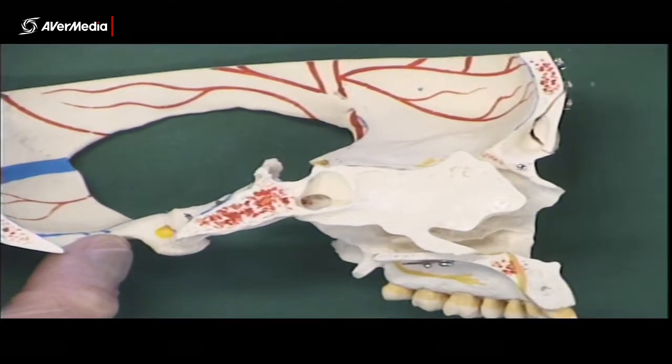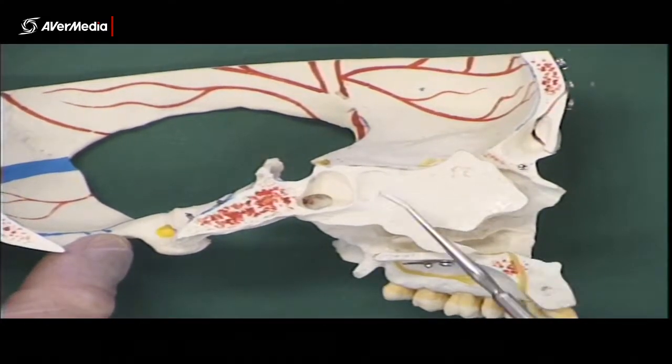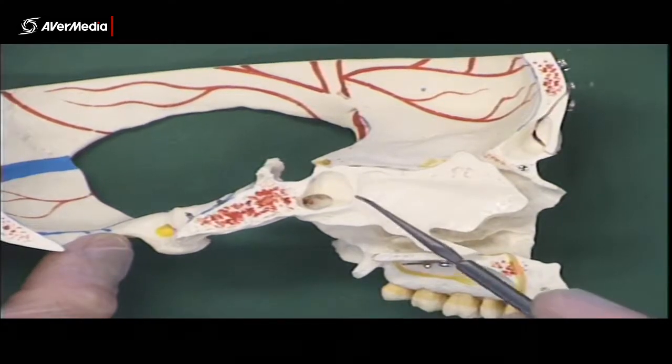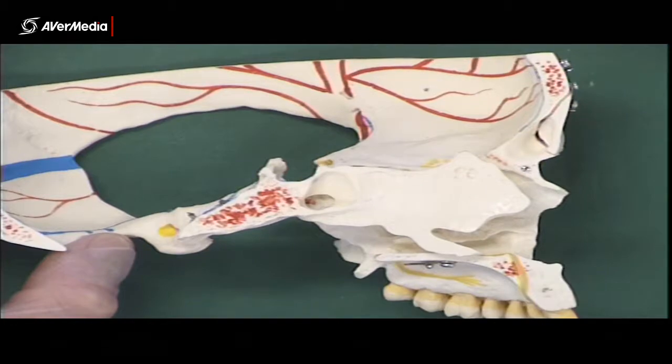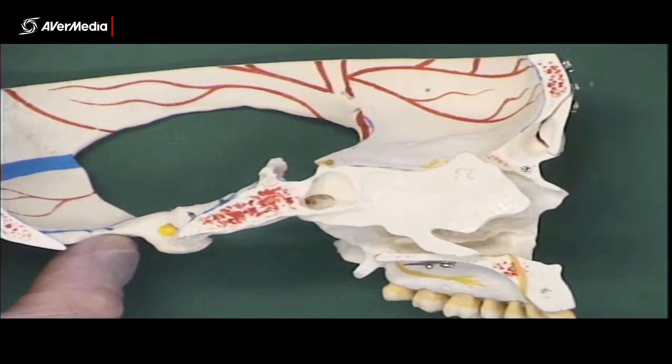Now from this mid-sagittal point of view we can see the nasal septum, and we can see just behind it there's a hole here. That's the sphenoidal or sphenoid sinus.